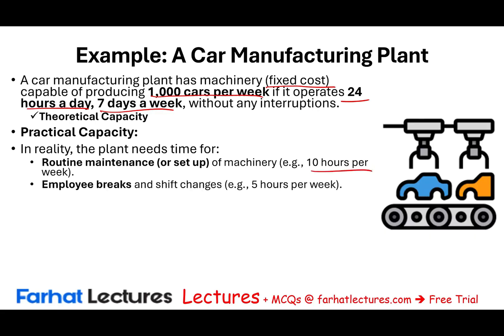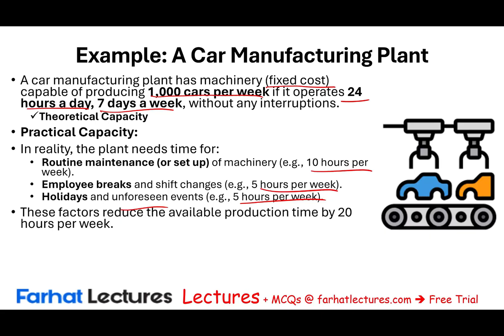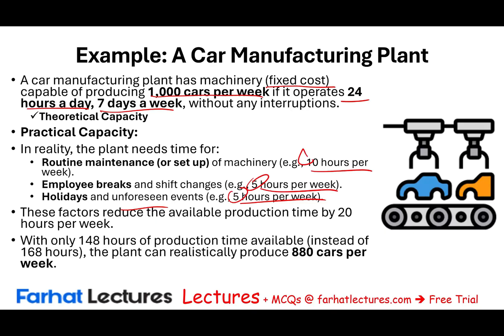You also need time for employee breaks and shift changes, totaling five hours per week, and holidays or unforeseen events like a power outage — another five hours per week. These factors reduce available production time by 20 hours, leaving only 148 hours instead of 168. As a result, you can realistically produce 880 cars per week. That's the practical capacity rather than the theoretical capacity.